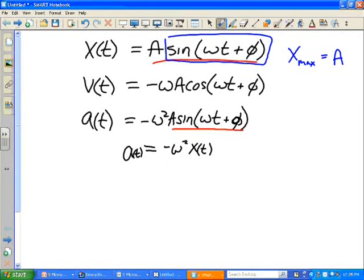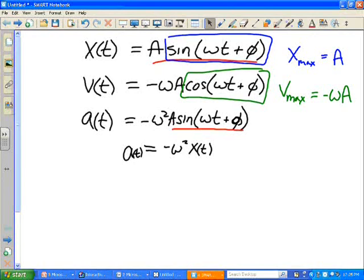Likewise, for the velocity, this function maxes out at one. So, your velocity max is just going to be omega times amplitude. And you do the same thing for acceleration. Maximum acceleration should then be omega squared times amplitude.